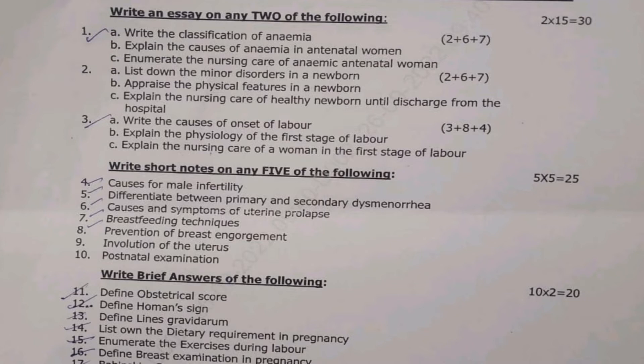Second question: 2a — list down the minor disorders in newborn; 2b — describe the physical features in newborn; 2c — explain the nursing care of a healthy newborn until discharged from the hospital. Third question: 3a — write the causes of onset of labor; 3b — explain the physiology of the first stage of labor; 3c — explain the nursing care of a woman in the first stage of labor. Out of these three questions you have to answer any two, 2 × 15 = 30 marks.